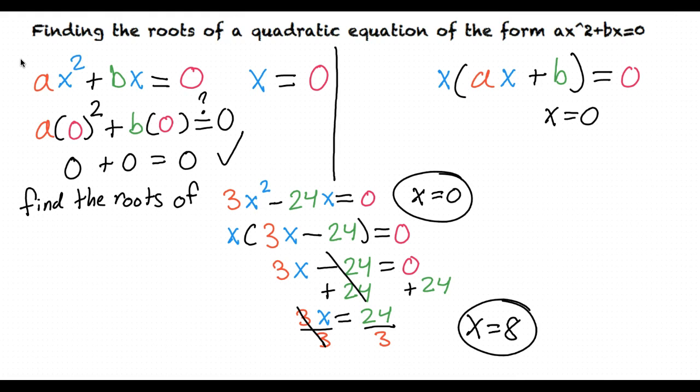I get it now. When we have a quadratic equation in the form ax squared plus bx equals zero, then we know that x equals zero is always a root. And then we just factor out the x and solve for the other part of the equation to get the second root.